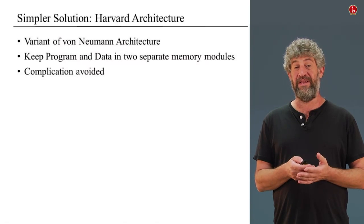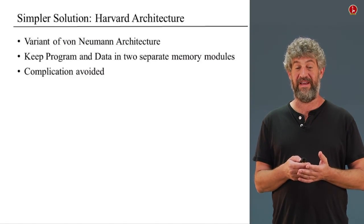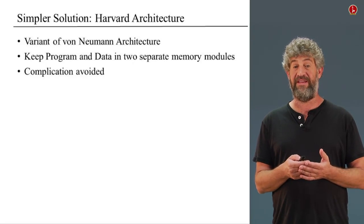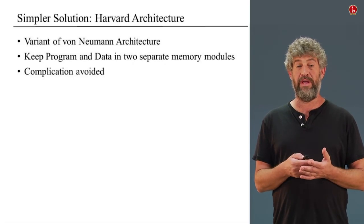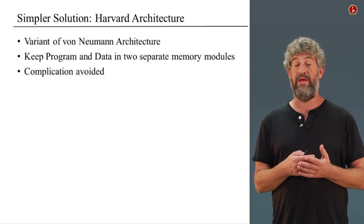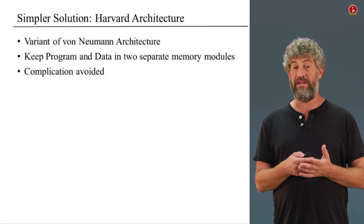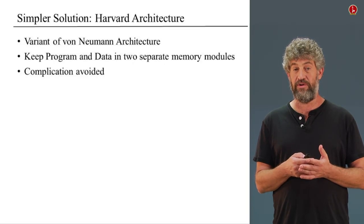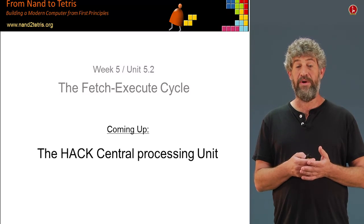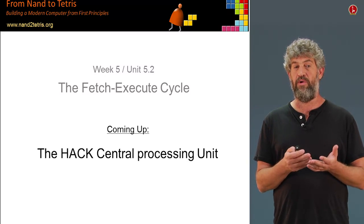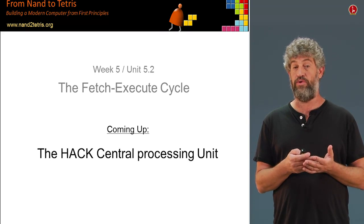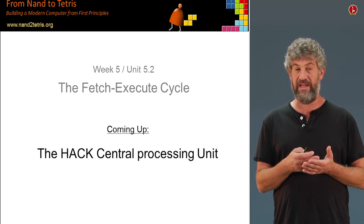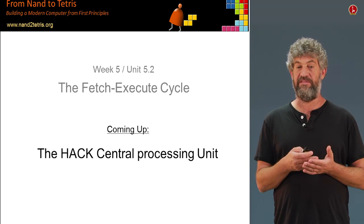There is a shortcut: simply keep the two different parts of the memory separate — one unit holding the data memory and another holding the program memory. Each unit has its own address, so we don't need to worry about switching between them. This is sometimes called the Harvard architecture, but we view it as a variant of the von Neumann architecture and use it for its simplicity. So we've basically finished talking about the general architecture of computers. In the next unit, we'll talk specifically about our Hack computer and how it is built.